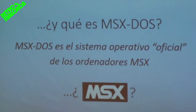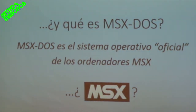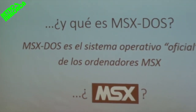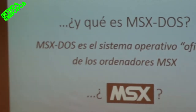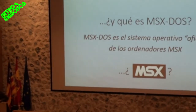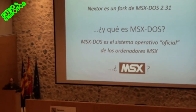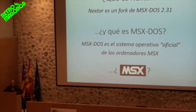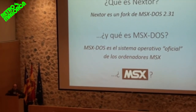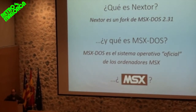We're already starting with strange words. Well, this talk is going to be full of strange words, don't worry. A fork is a kind of split, in the good sense, in the world of software. That is, we take an existing software project, take its source code, and from there we create a completely new project — but not from scratch, rather from the original sources.